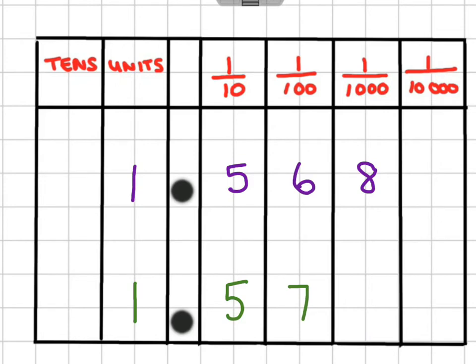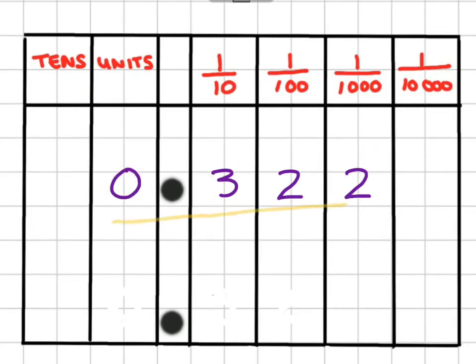Let's look at another one. We have 0.322, and we're rounding to two decimal places. Can the 2 actually affect this 2? No, it can't. Why?